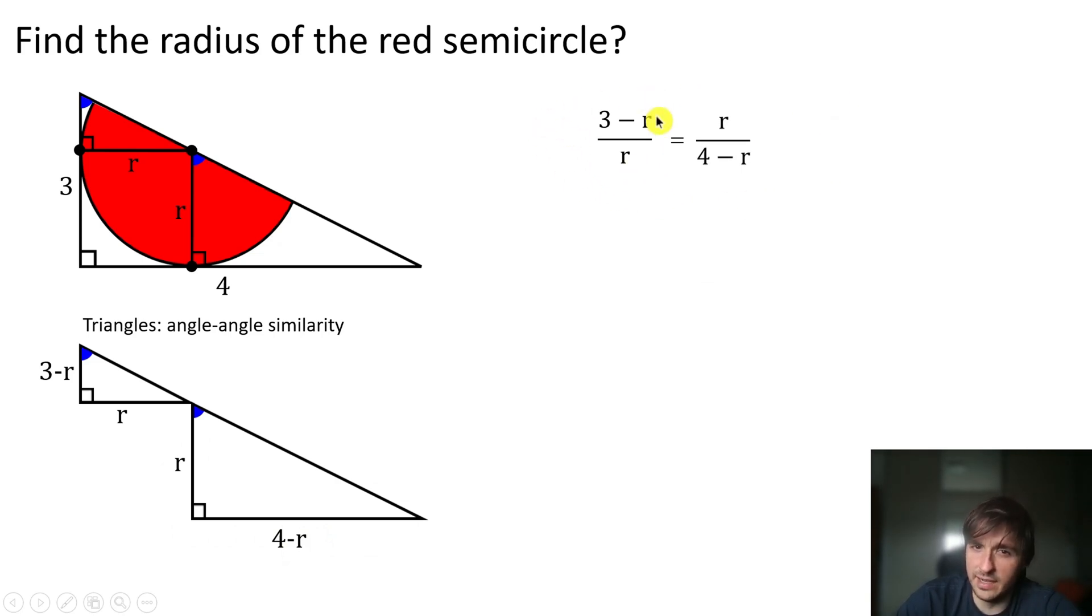Here it gives us a scaling factor, and here also the same scaling factor, because this triangle is scaled to be equal to this one. So here we can make the cross multiplication. We end up with (3 - r) times (4 - r) equals r².